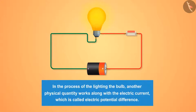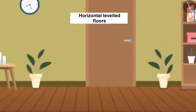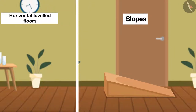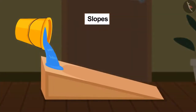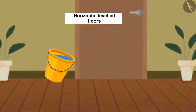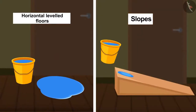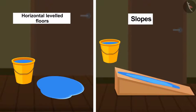In the process of lighting the bulb, another physical quantity works along with the electric current, which is called electric potential difference. What is this electric potential difference? Let us try to understand this with the help of an example. Have you ever poured water on a horizontal leveled floor and on slopes? Does water flow the same way in both cases? The answer is no — on slopes the water flows till it reaches the bottom, and on the horizontal floor it will stop flowing after a while. In the case of slopes, no extra force is required, whereas on the horizontal floor water stops flowing as soon as the applied force tends to zero.